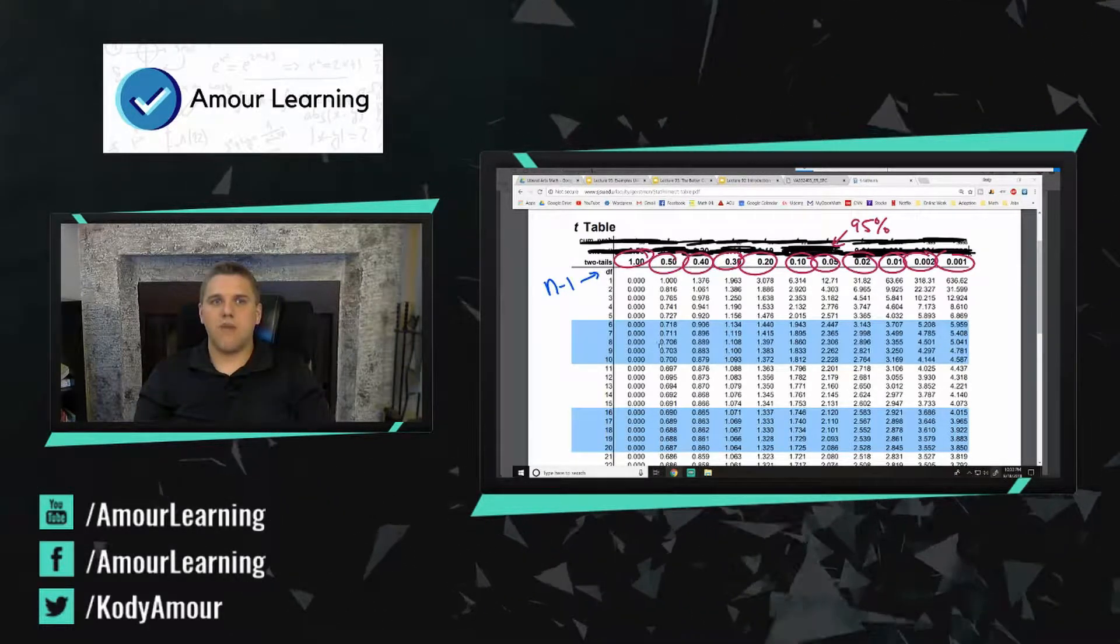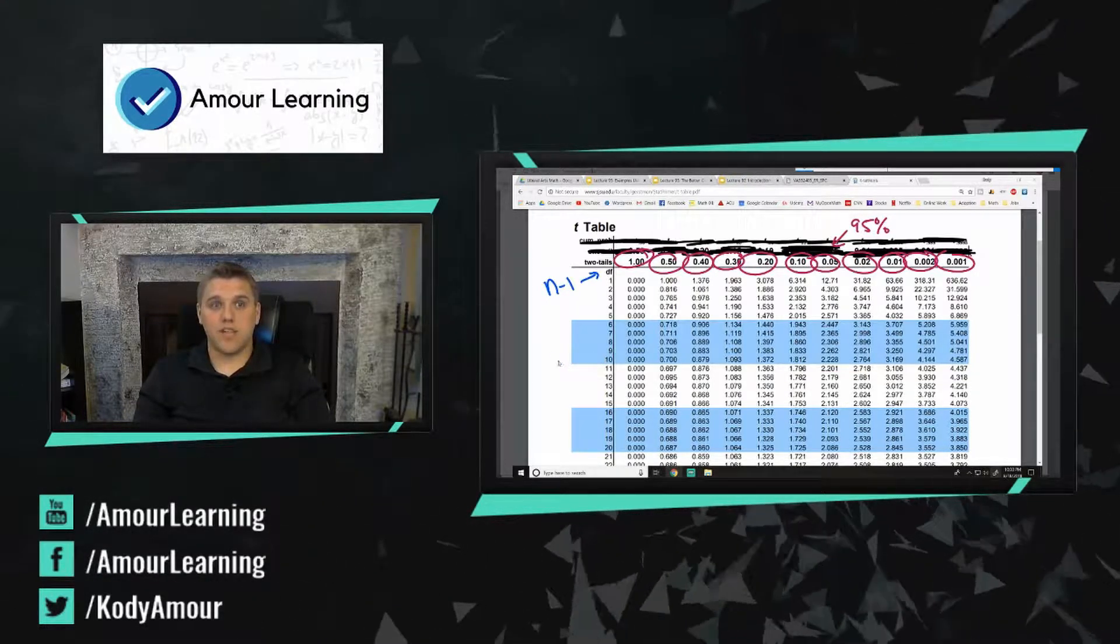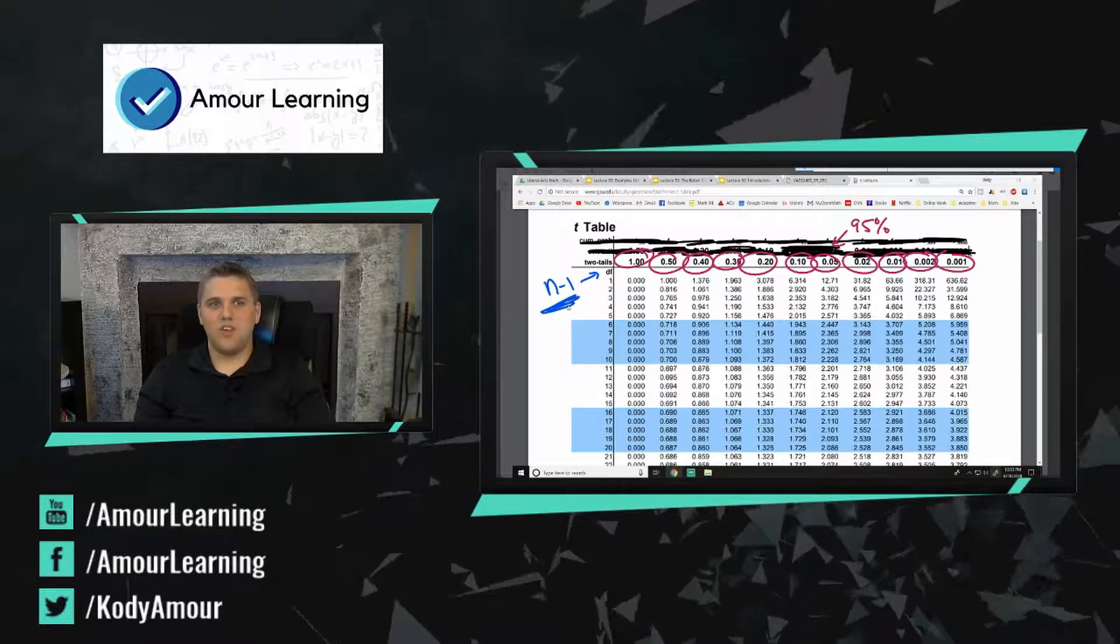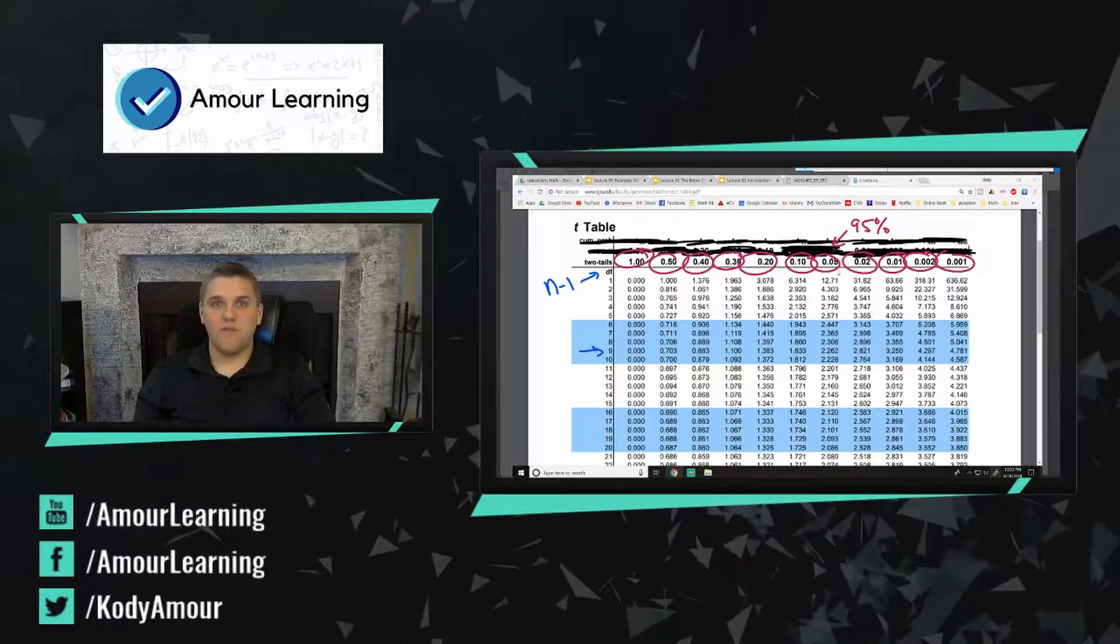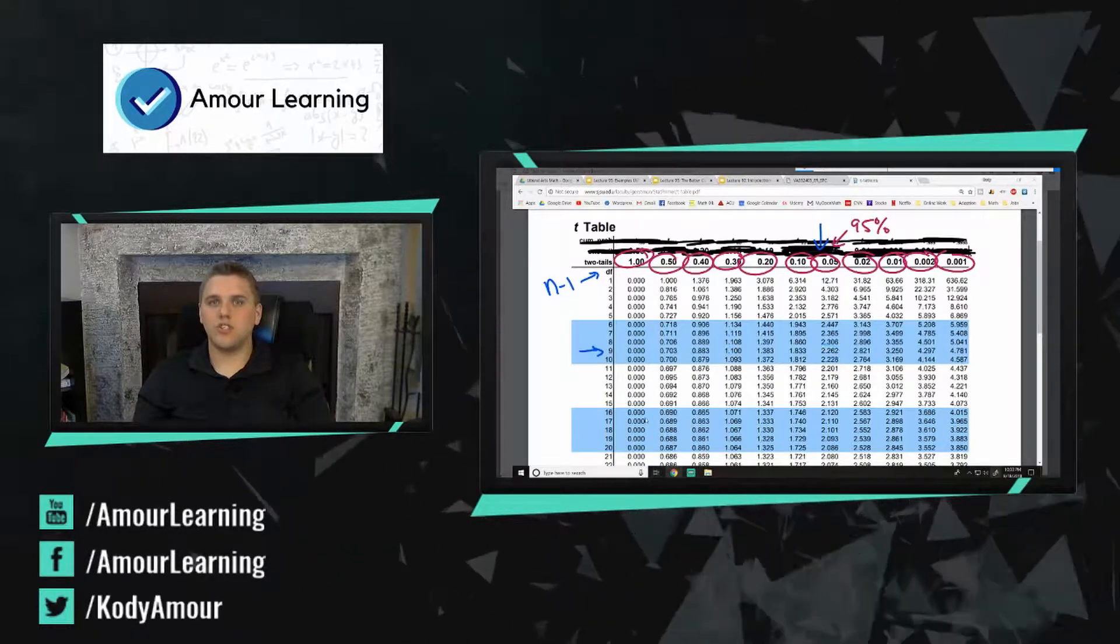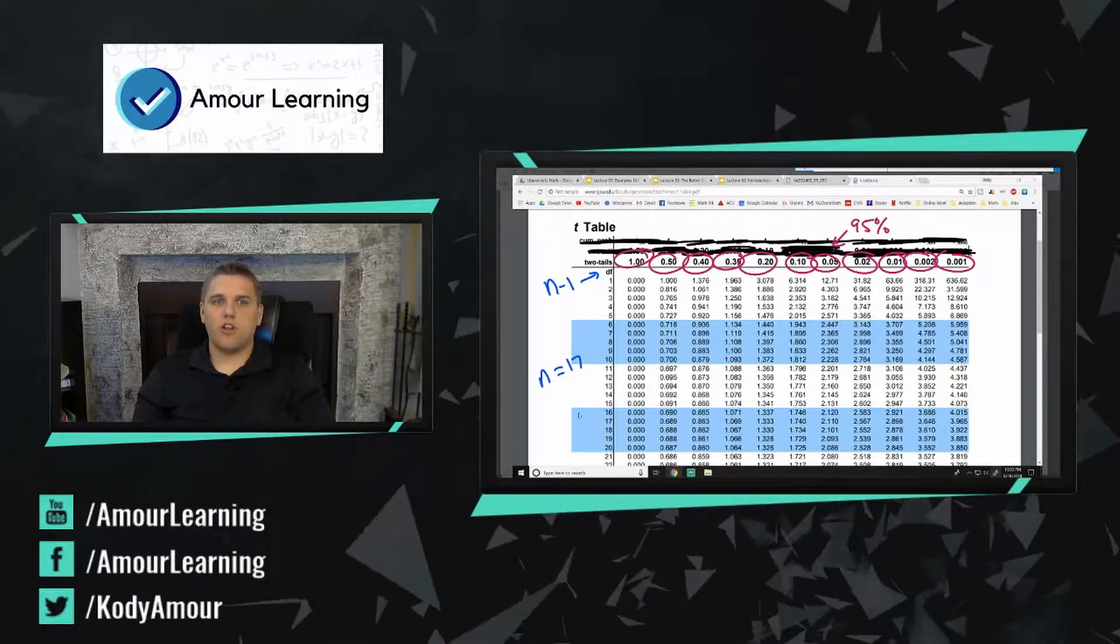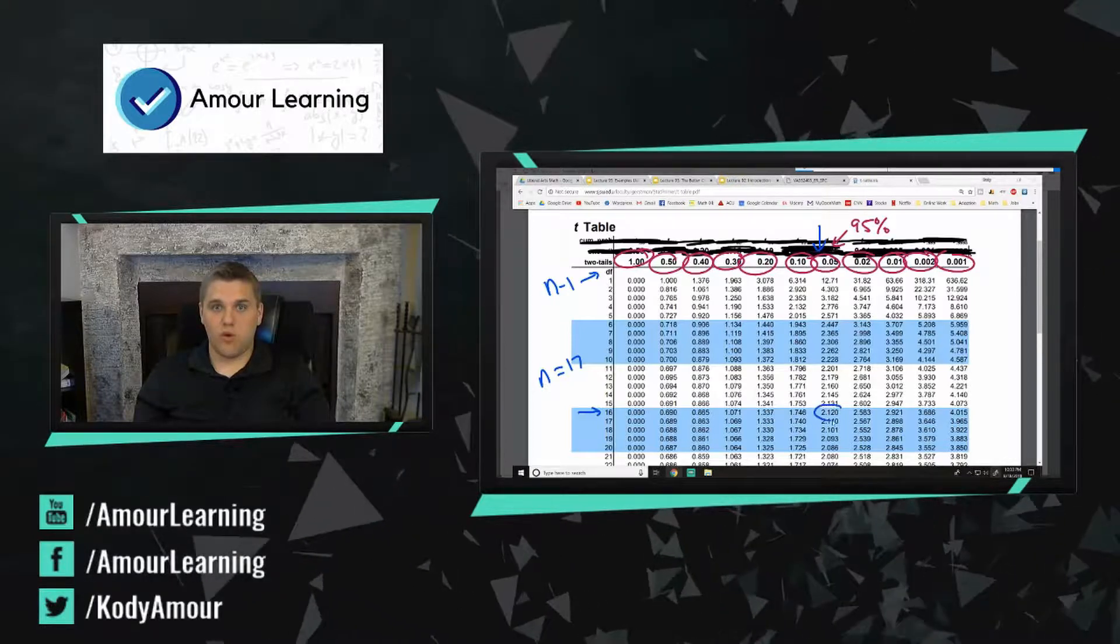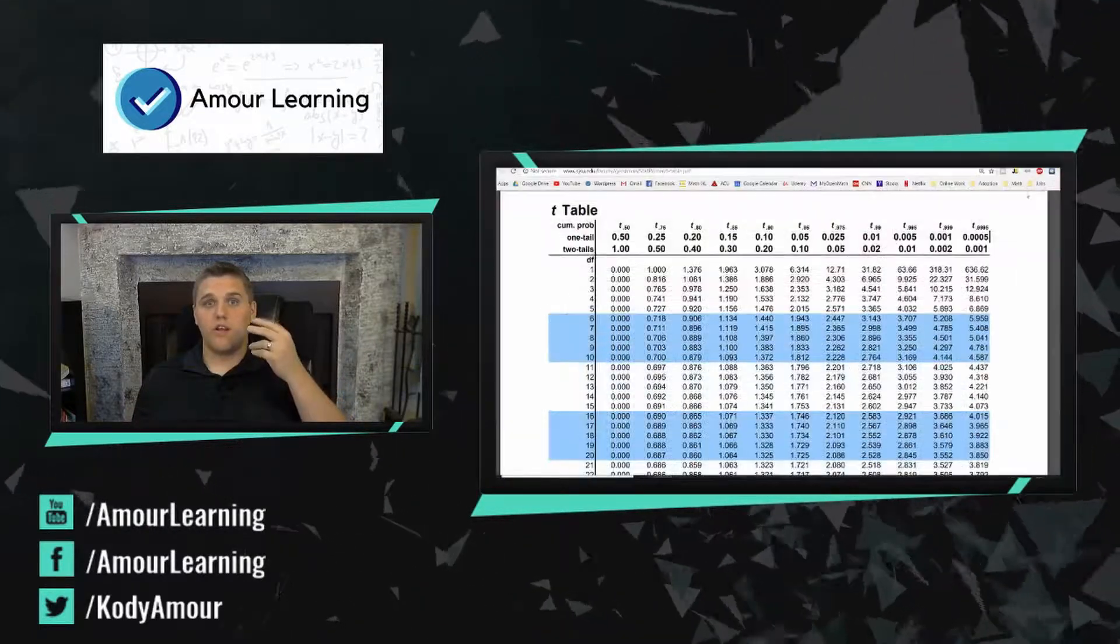So if for example you sample 10 people and you're doing a 95% confidence interval, here's where the sample size is 10. But we're not going to use that one because we need to do n minus 1 which would be 9. So we're going to use this row and this column because that's a 95% column which would correspond to a T-score of 2.262. Let's try another one. What if n equals, let's do 17. Then we're going to look at the degrees of freedom being 16. Our confidence interval is going to be 95% so it looks like 2.12. Now I'm going to go back to this T-table and I'm going to point out something that's really important here about this T-table.